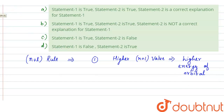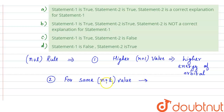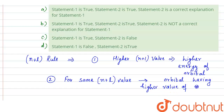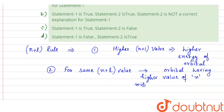Now, in case when two or more orbitals have the same n plus l value, then we have another rule: for the same n plus l value, the orbital having a greater n value will have greater energy. So the orbital with the higher value of n will have higher energy.